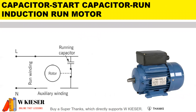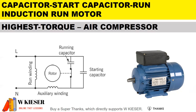Now let's look at the capacitor start, capacitor run, induction run motor. In the circuit diagram we have the main winding also known as the run winding, the auxiliary winding also known as the start winding, a run capacitor, and a start capacitor — so there are two capacitors in this circuit. This motor is used in machines like air compressors because it has the highest torque.